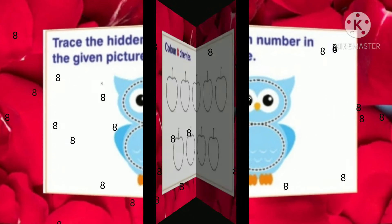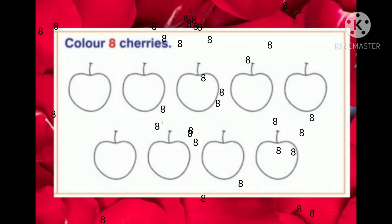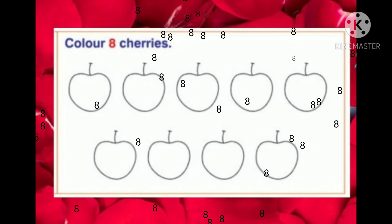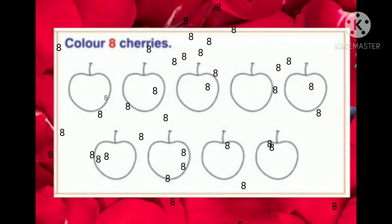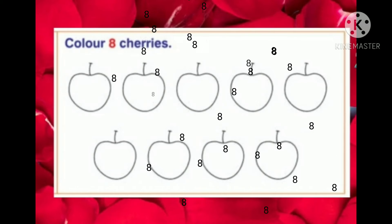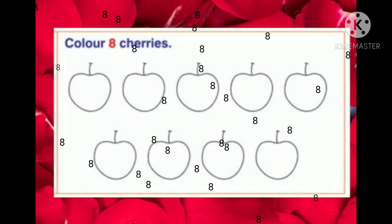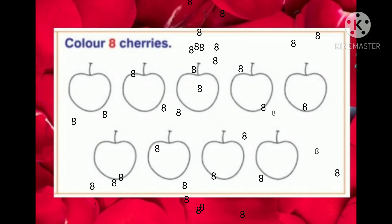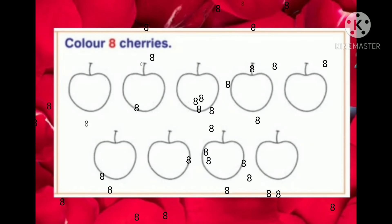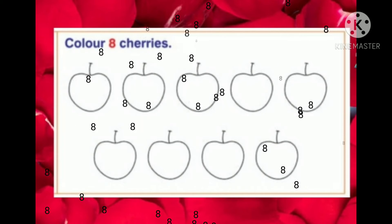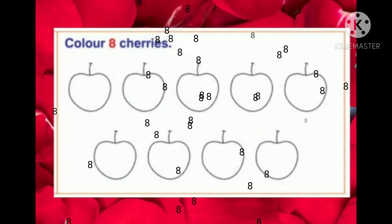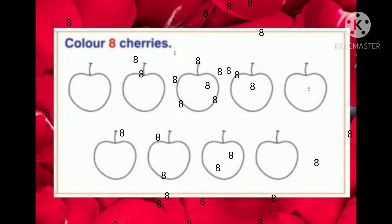Now, what do you see at last? You can see cherries. How many cherries are there? 8 cherries. You pretty children are answering brilliantly. I will give you an activity of coloring. Do you like coloring? Good. Color 8 cherries.